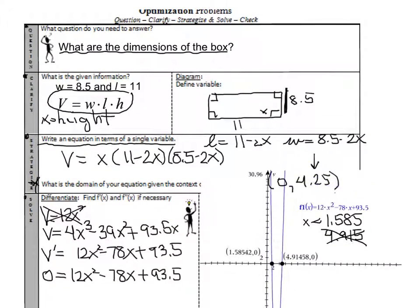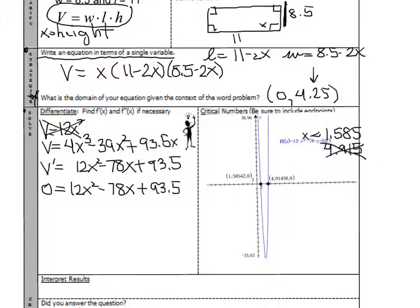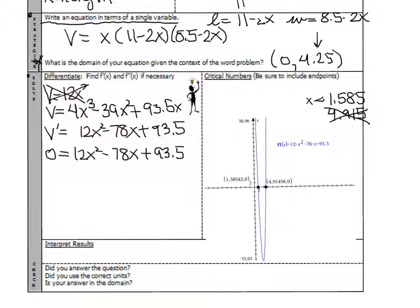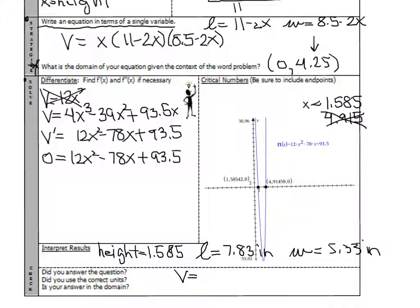To finish off the problem, we answer the question: find the dimensions. If x is the height, and that's 1.585 inches, then the length is 11 − 2(1.585) = 7.83 inches, and the width is 8.5 − 2(1.585) = 5.33 inches. When we multiply those three dimensions together, the maximum volume is 66.148 cubic inches.